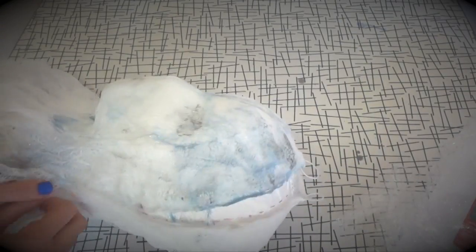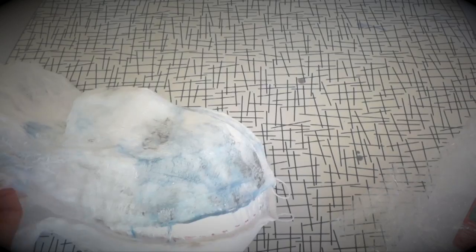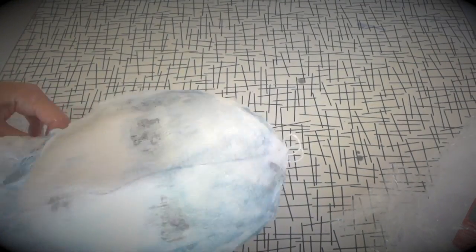Let both pieces dry for a few hours and then gently begin working them off the form. If they are completely dry and you use plastic wrap this will not be difficult.